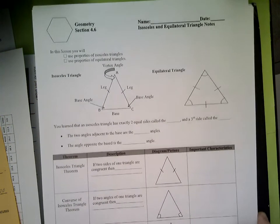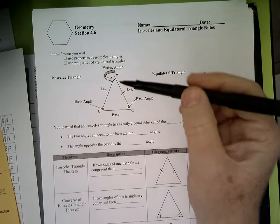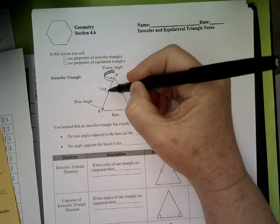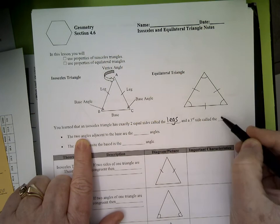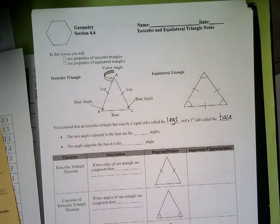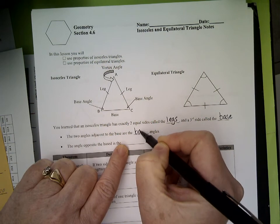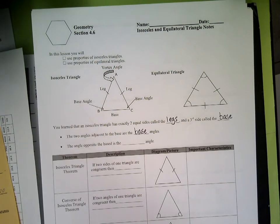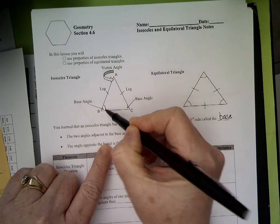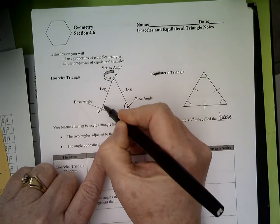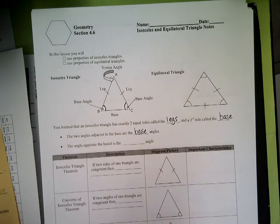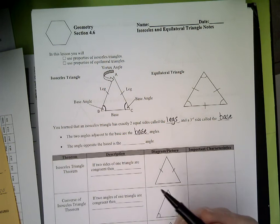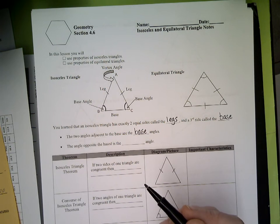Alright, here we go. Isosceles and equilateral triangles. In an isosceles triangle, the two sides that are congruent are called legs, and a third side is called the base. Angles adjacent to the base are called base angles, and they are congruent. One way to remember that is that the angles that are across from the legs are congruent to each other. The angle opposite the base is called the vertex angle.